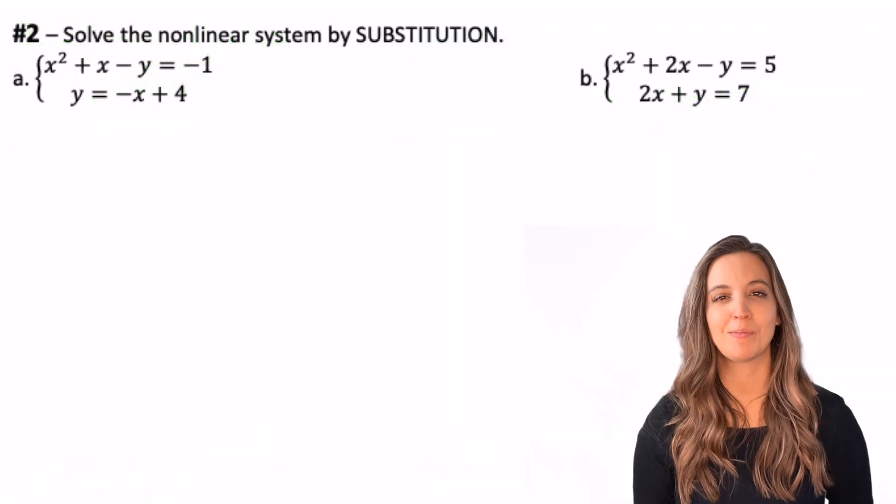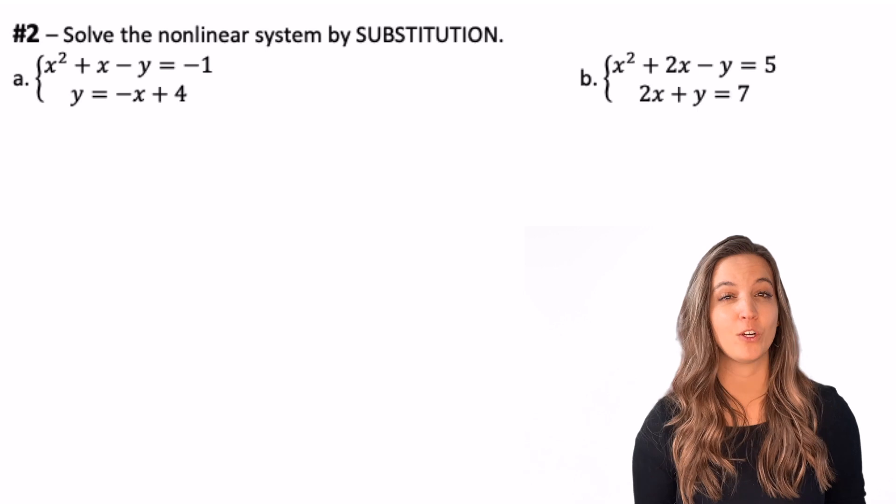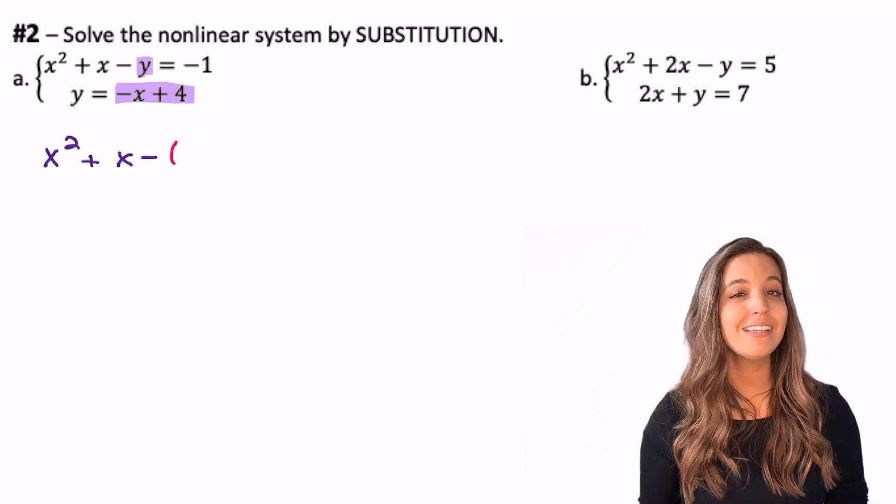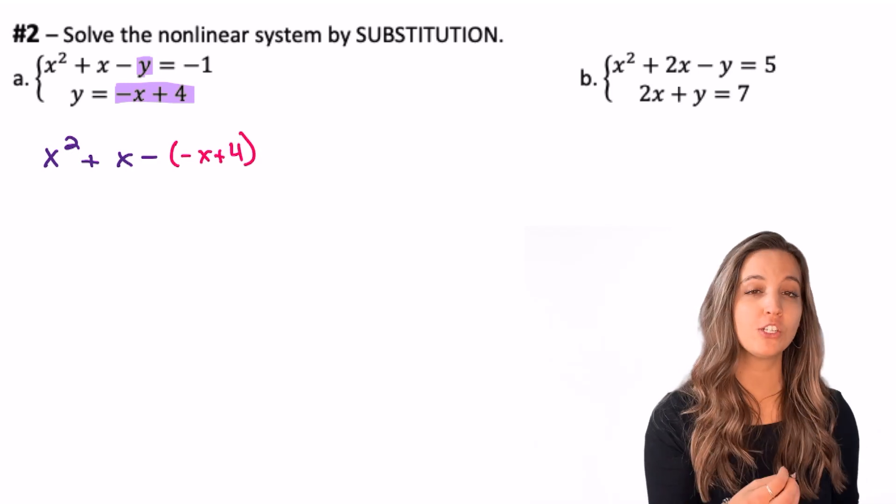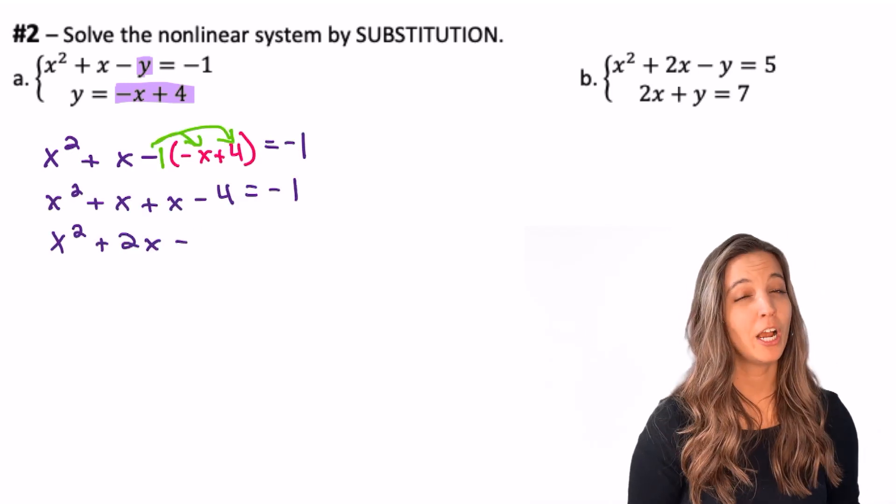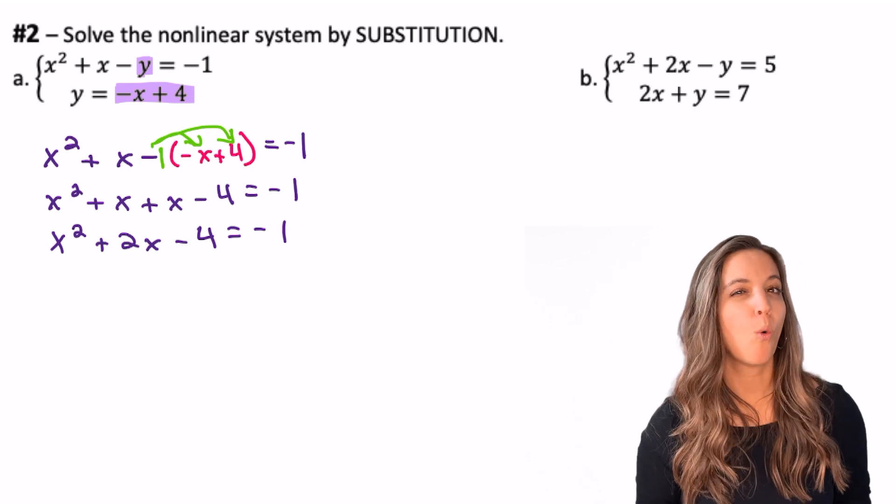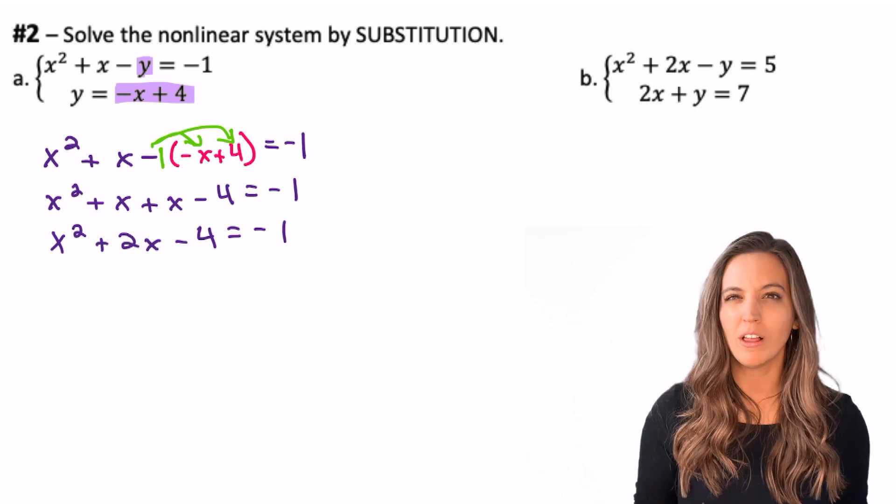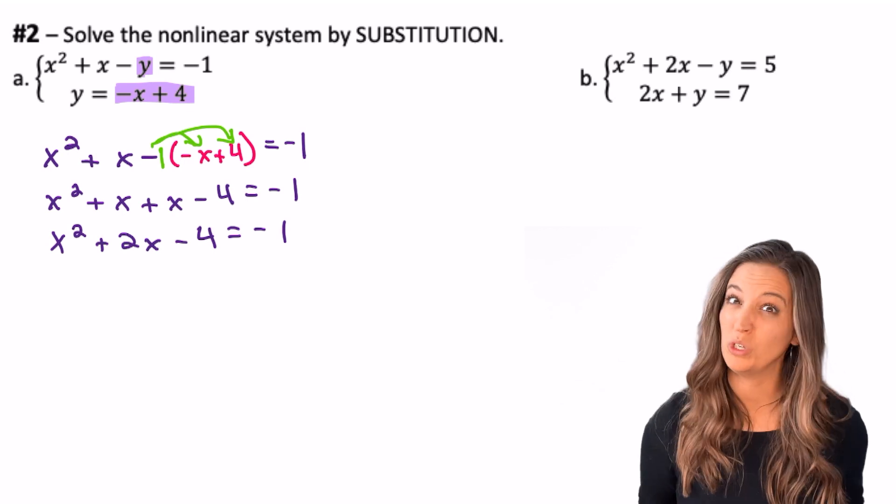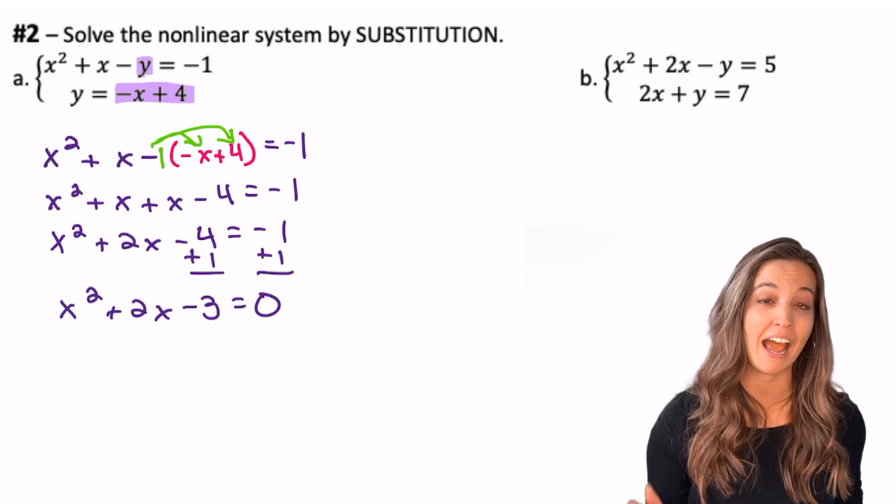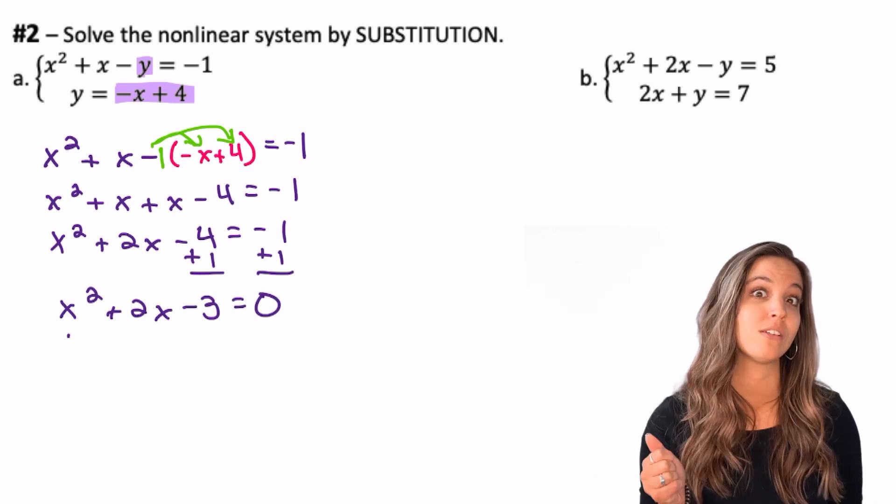Solving nonlinear systems by substitution. Looking at this first system, we have the second equation solved for y. So let's substitute that into the first equation for y. After I plug in, I can distribute my negative and simplify, leaving me with a quadratic equation. Well, how do we solve quadratics? We should always try to factor them first. So zero product property, got to get everything to one side, so equals zero.